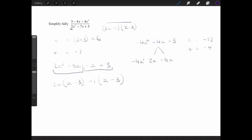So I'm writing this out now. I get negative 4x squared plus 2x minus 6x plus 3.